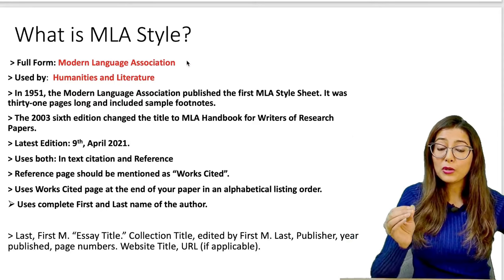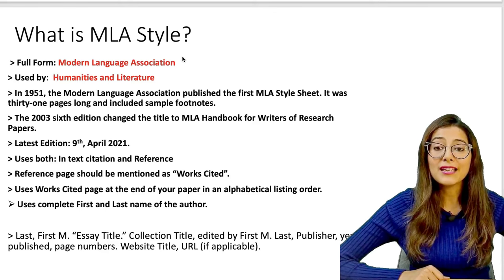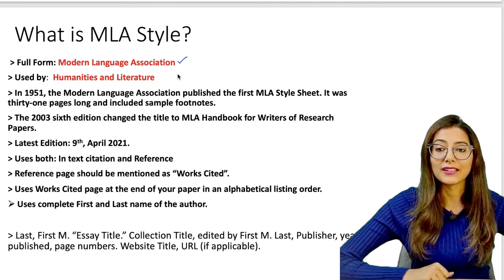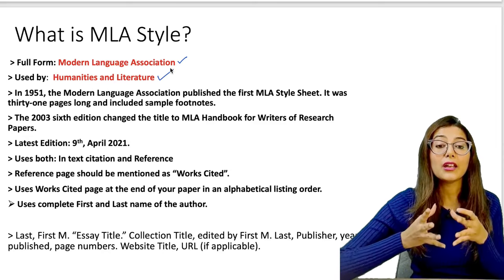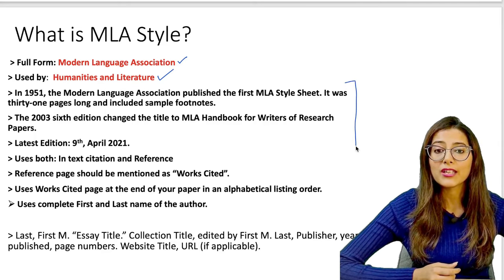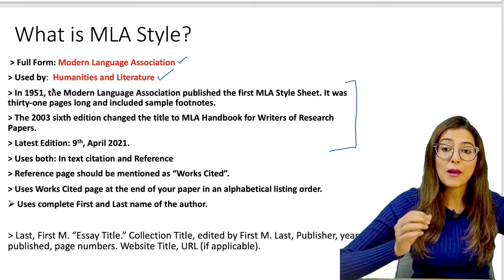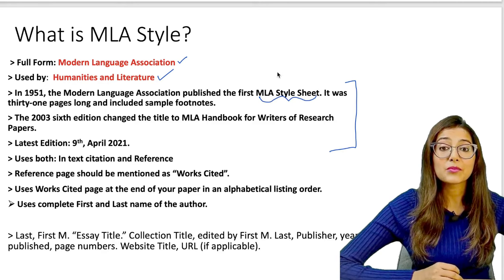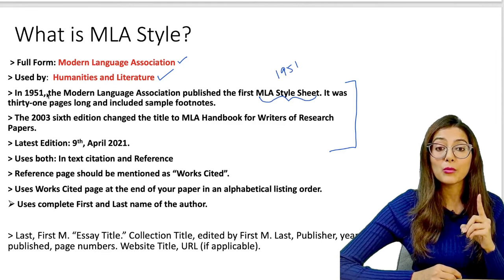First, we will see the full form. The full form of MLA style is Modern Language Association — you have to remember this because sometimes questions come from the full form. MLA style is important for us because it is used in humanities and literature sources and research. Now, three important points: the MLA style sheet was first published in 1951. Remember: MLA style sheet, published in 1951.